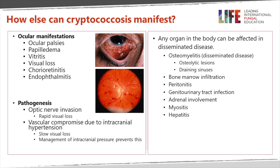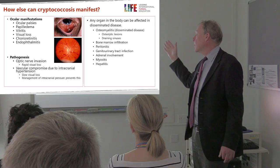There are rarer manifestations of eye disease. Ocular palsies and papilledema are moderately common in patients with cryptococcal meningitis and can go on to visual loss, which is quite serious. Here is an example of chorioretinitis, which is a rare manifestation. You can also get optic nerve direct invasion, or high pressure which causes visual loss.